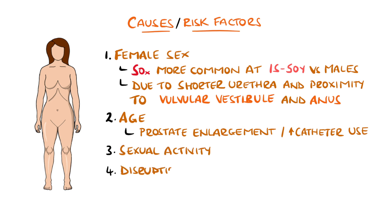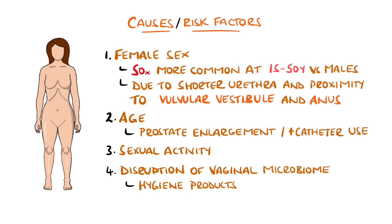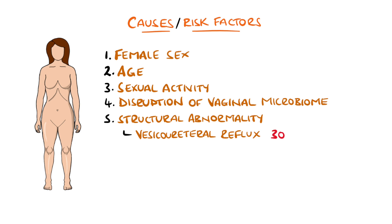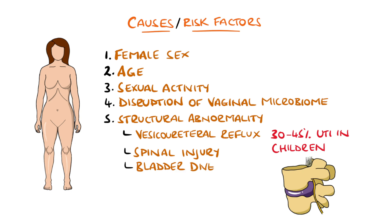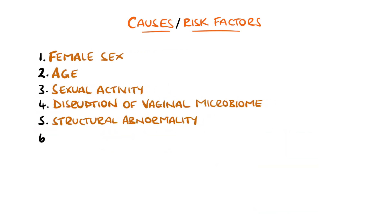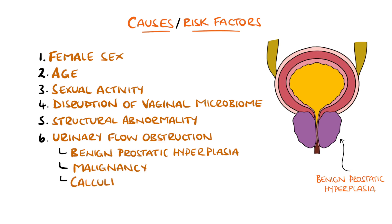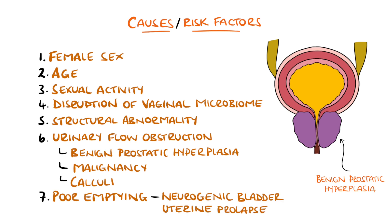The presence of prostate enlargement and the use of devices like catheters means UTI becomes more common in males, but remains less common than it is in females. Others include sexual activity, use of products that disrupt vaginal microbiome, including hygiene products and antibiotics. Structural abnormalities increase the risk, the most common being vesicoureteral reflux, responsible for 30 to 45% of symptomatic urinary tract infections in children. UTI may also be a possible complication of spinal injury, and bladder diverticula are another example of structural abnormalities.